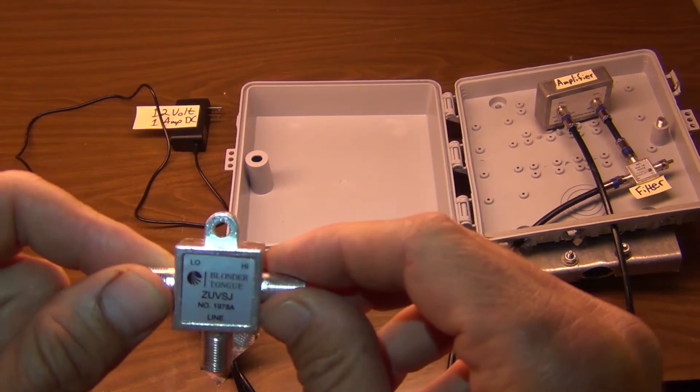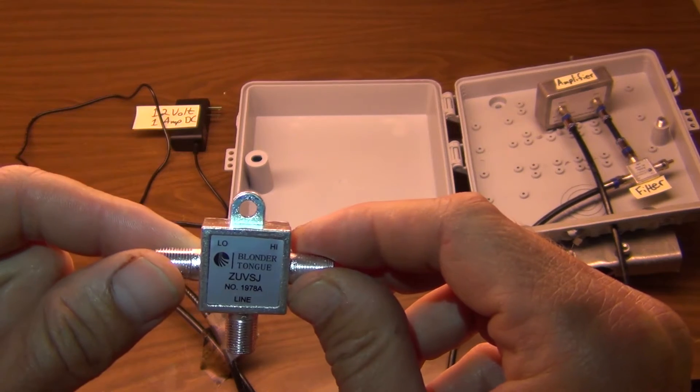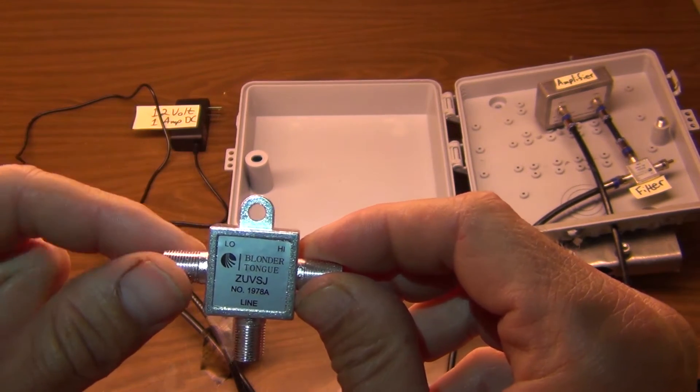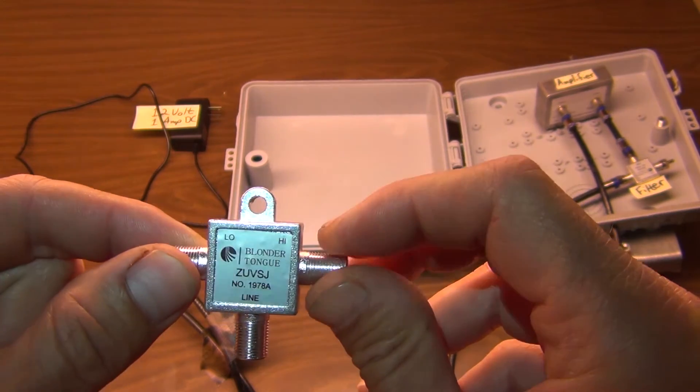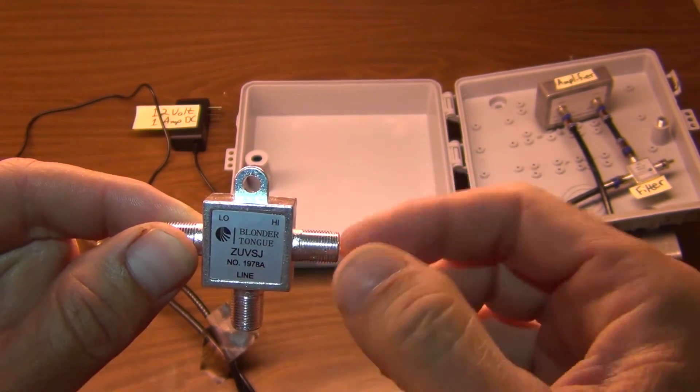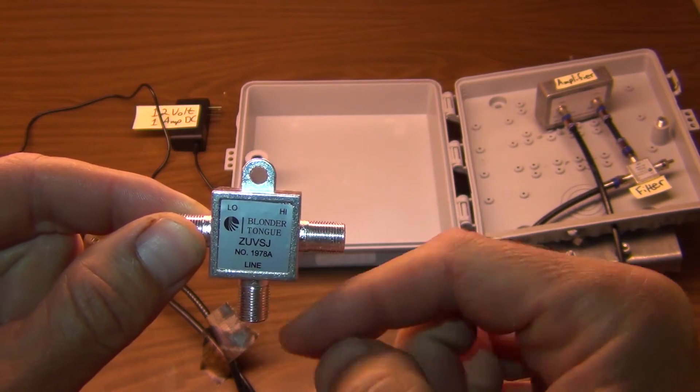If I use one of these, they're a combiner. It's a UHF VHF combiner. The low is the VHF, the high is the UHF, and then combines the two, and this is your output, the line.